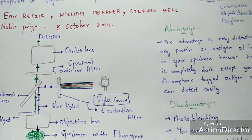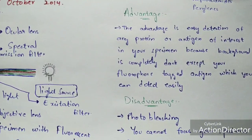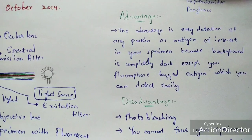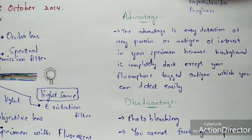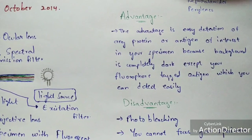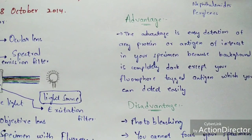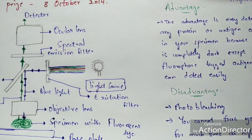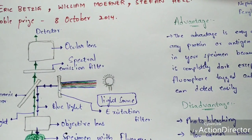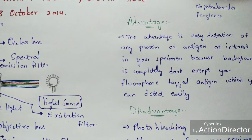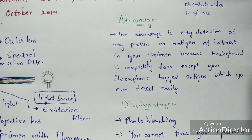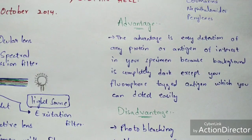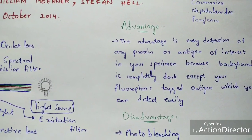A major advantage of fluorescent microscopy is that it helps in easy detection of any type of protein or antigen of interest. For example, you can take blood from a human, place it on the base plate, and easily identify the particular type of antigen present in the blood. It depends upon your interest what specimen you place on the base plate.